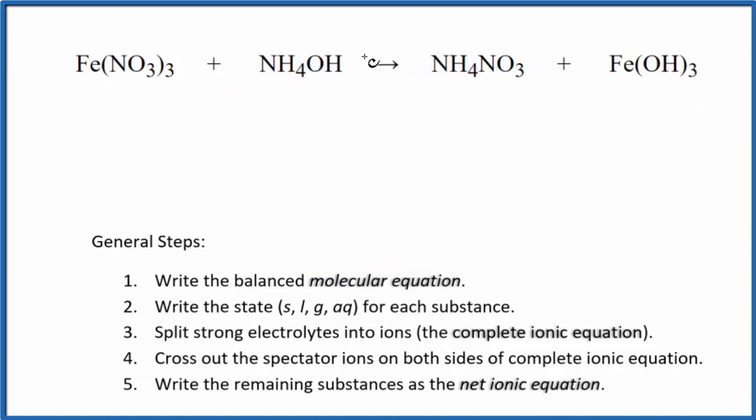I can see that I have three of these nitrate ions here and then just one here. So I'm going to put a 3 in front of the ammonium nitrate. At this point, to balance the ammonium ion, I have three, so I'll put a 3 in front of the ammonium hydroxide. Now the ammonium ions are balanced.